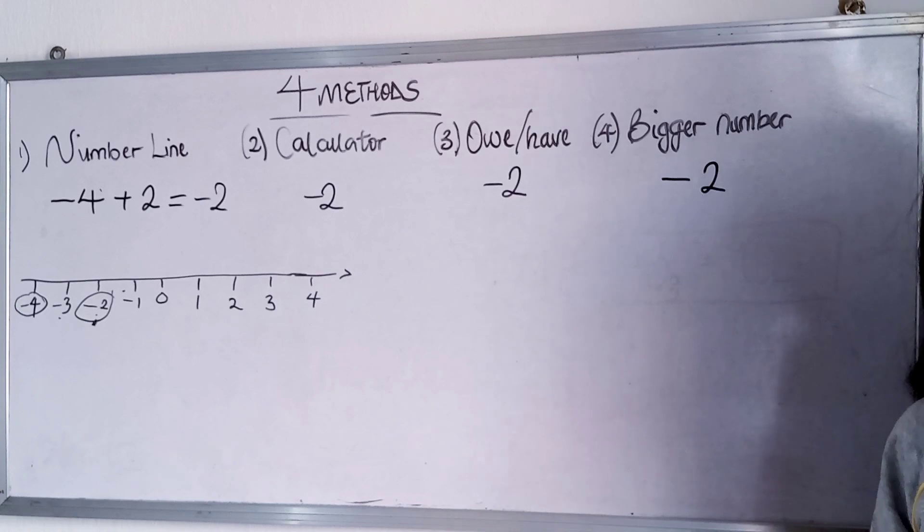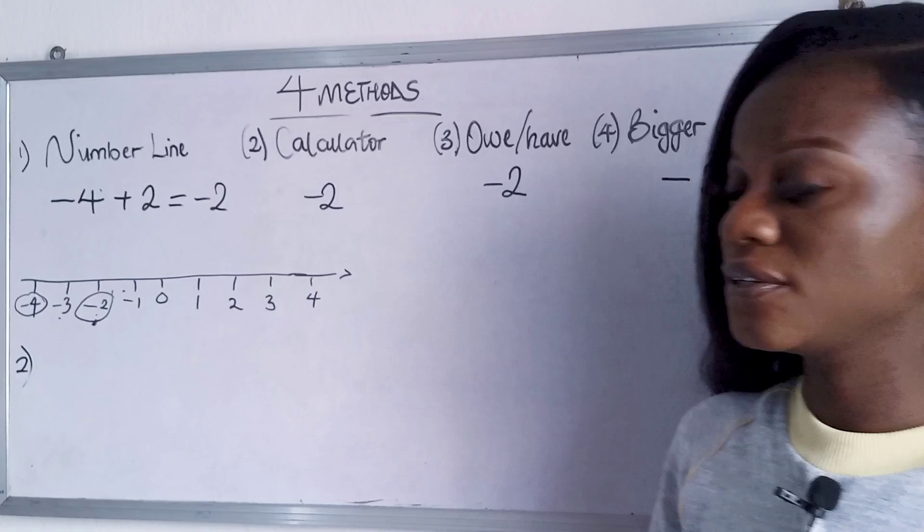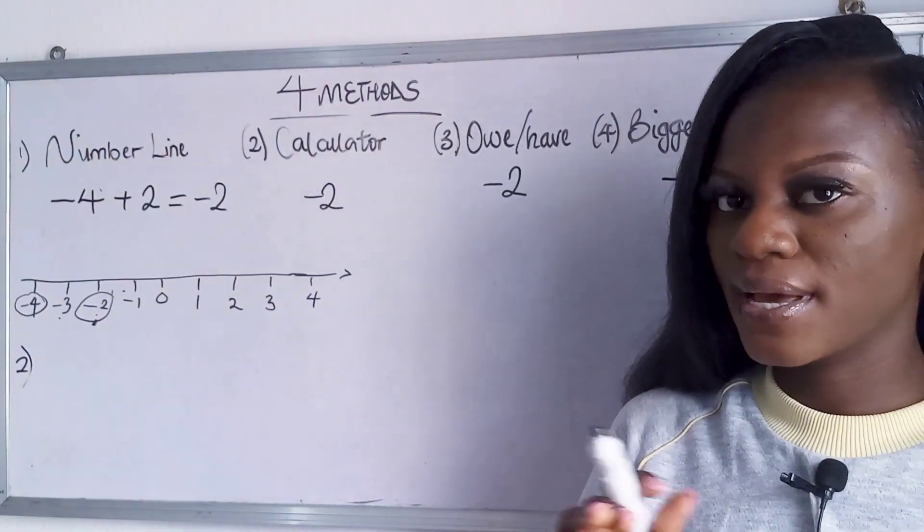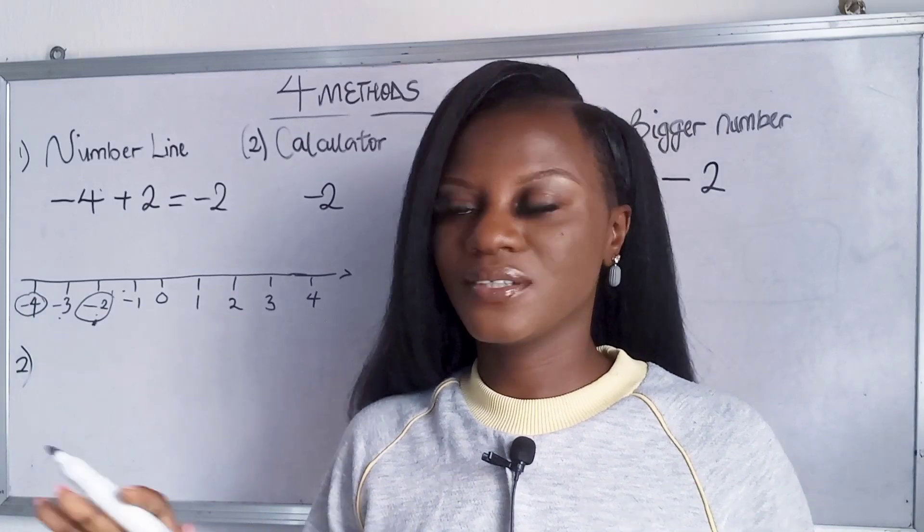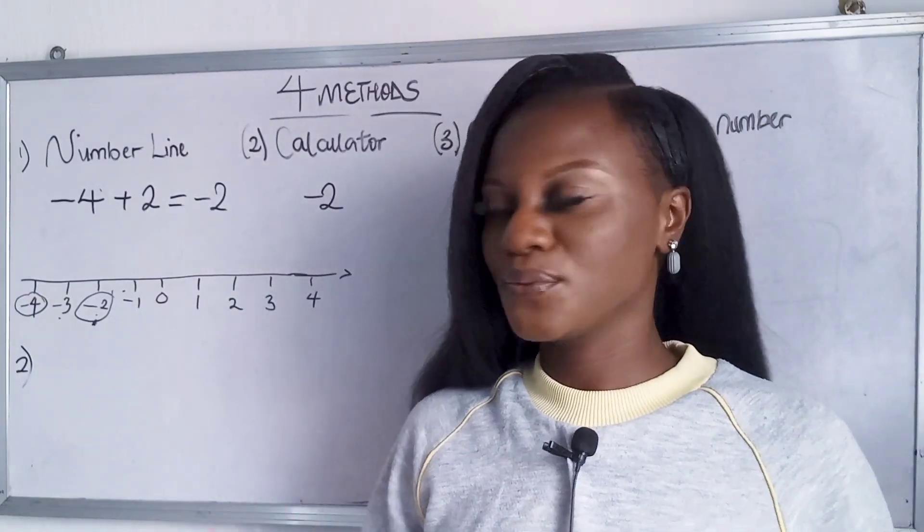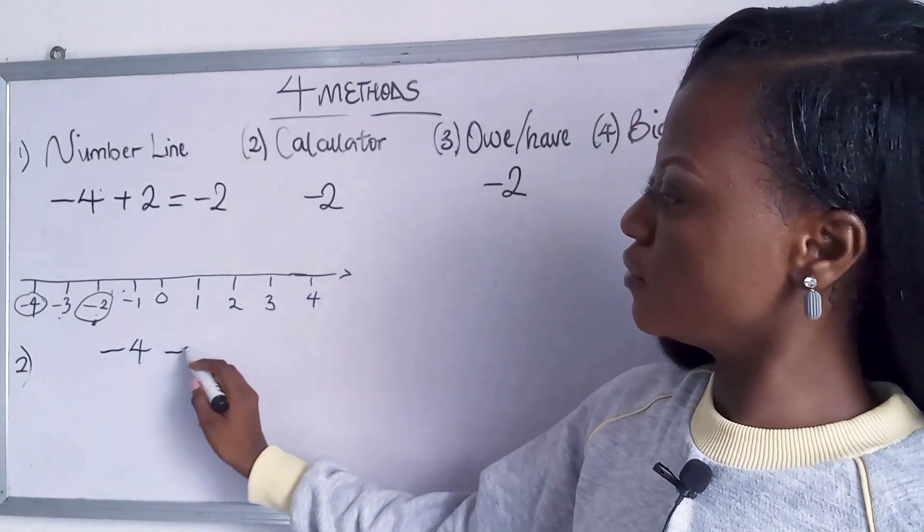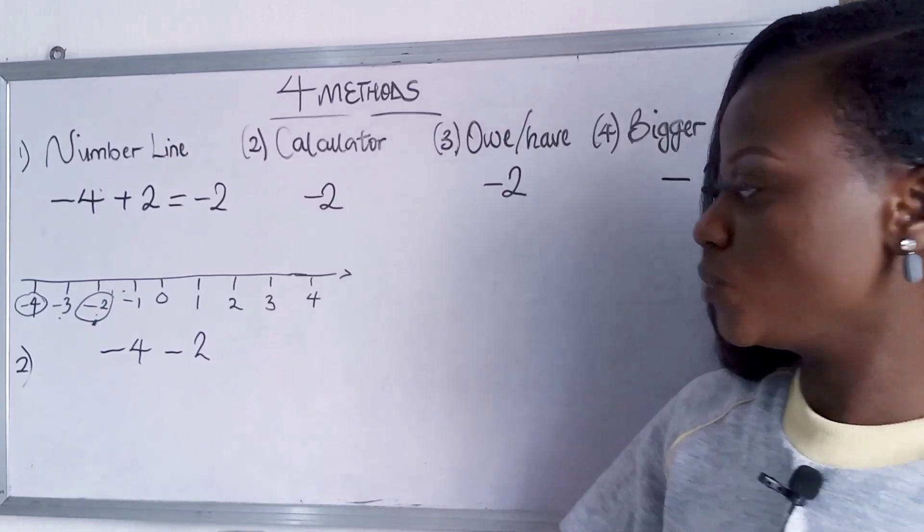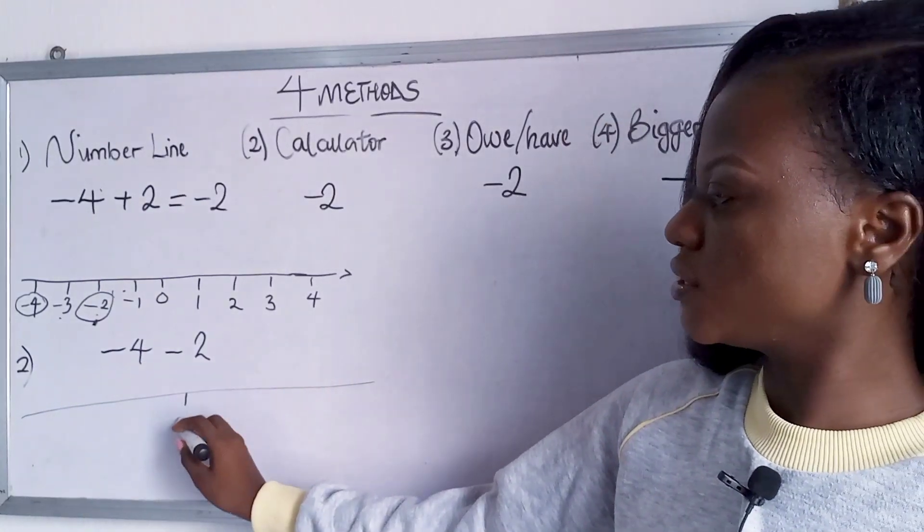Now let's do one more example so that we are on track. I'm going to give small numbers so that our number line doesn't go too long. We have minus four minus two. Right? The first method was the number line method. You draw your line. You start with your zero.